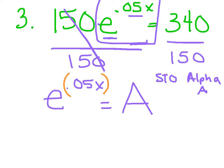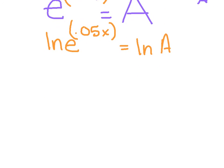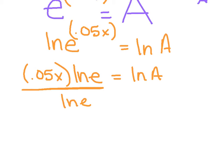So the ln of E to the 0.05 x equals the ln of A. Use my log properties. I'm going to bring that 0.05 x down in front. ln of E equals the ln of A. If I read it out loud, it says 0.05 x times ln of E. So to get rid of the ln of E, I'm going to divide it out. I've got my 0.05 x equals. I'm literally hitting A on my calculator now.